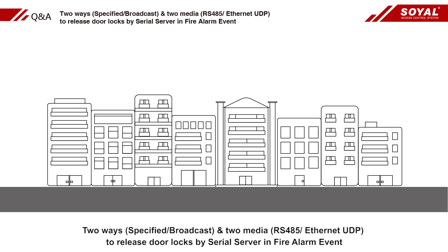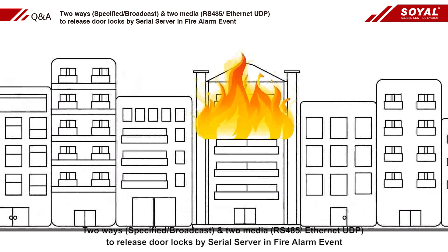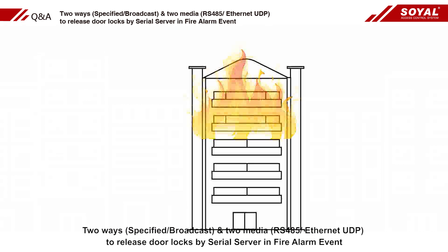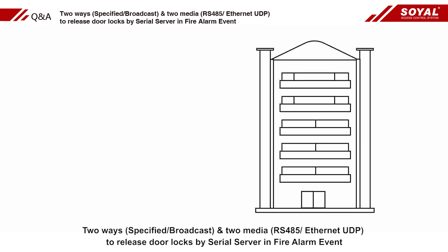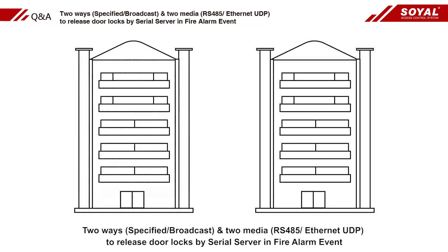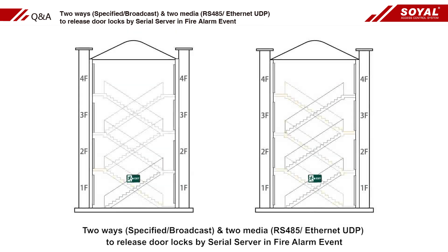Two ways to specify broadcast and two media — RS-485 and internet UDP — to release door locks by serial server in a fire alarm event.